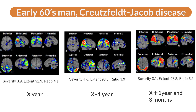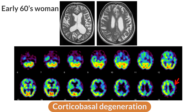In a case of Creutzfeldt-Jakob disease, the patient was initially followed as Alzheimer's disease, but after one year the dementia progressed rapidly. Brain perfusion SPECT showed decreased perfusion in the temporoparietal lobe and posterior cingulate gyrus to precuneus, and after one year and three months the perfusion decrease in the same area became extremely severe — a pattern similar to Alzheimer's disease. In a case of corticobasal degeneration, MRI shows marked atrophy of the left cerebral hemisphere, and brain perfusion SPECT shows marked hypoperfusion in the left frontoparietal lobe and hypoperfusion in the left basal ganglia.